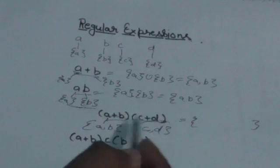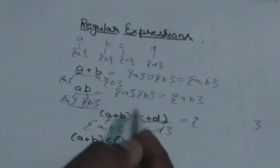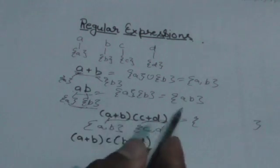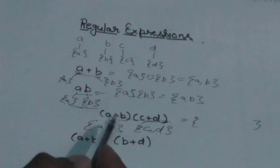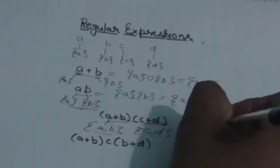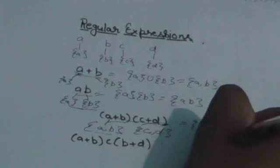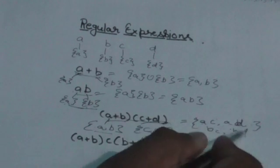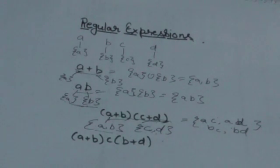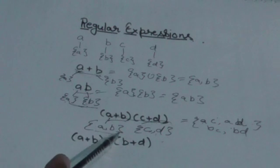The regular set of this expression will contain strings formed by concatenating a string from the first set with a string from the second set. That gives us: ac, ad, bc, and bd. We can say this regular expression represents the set of all strings of length 2 whose first symbol is either a or b and whose second symbol is either c or d.